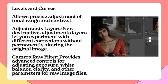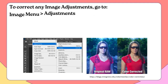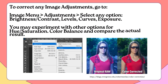Camera Raw Filter: Provides advanced controls for adjusting exposure, white balance, clarity, and other parameters for raw image files. To correct any image adjustments, go to Image Menu > Adjustments, then select any option — Brightness/Contrast, Levels, Curves, Exposure. You may experiment with other options for hue/saturation, color balance, and compare the actual result.